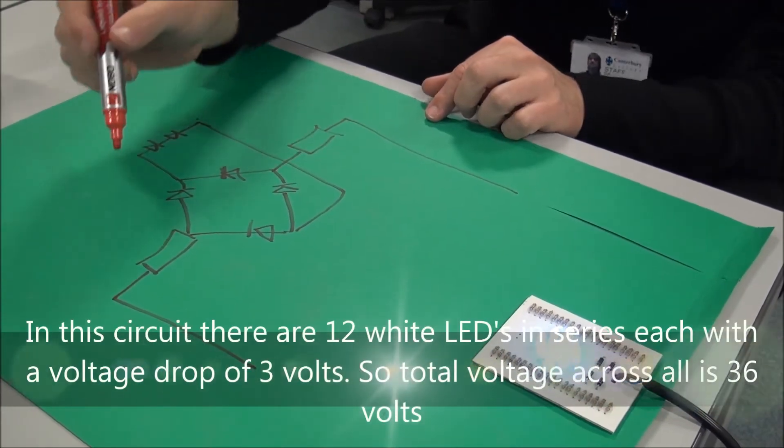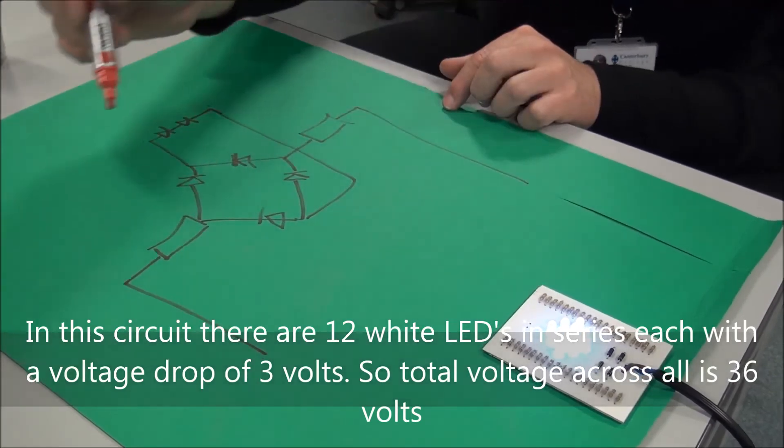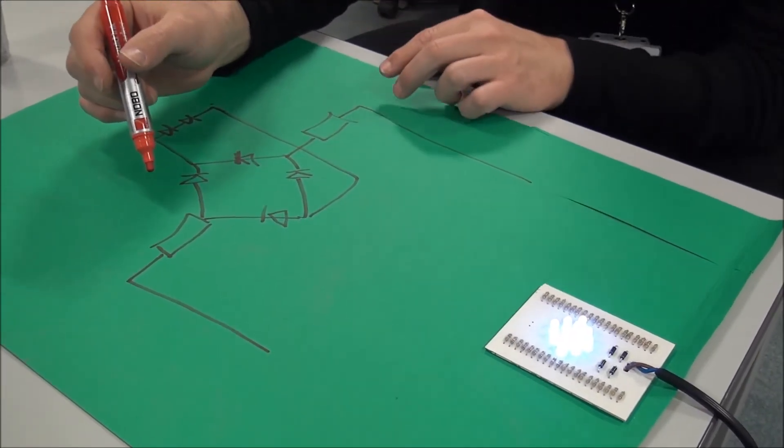We can mess around with this later to make these LEDs much brighter. Maximum current for the LEDs is 30 milliamps. We're only running them on 8.